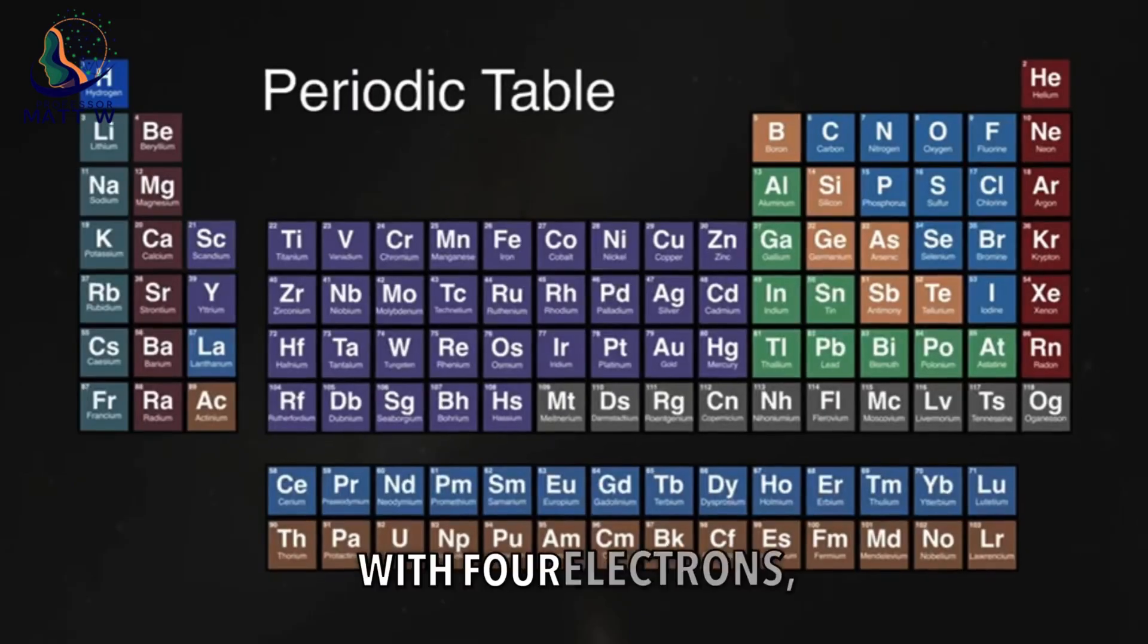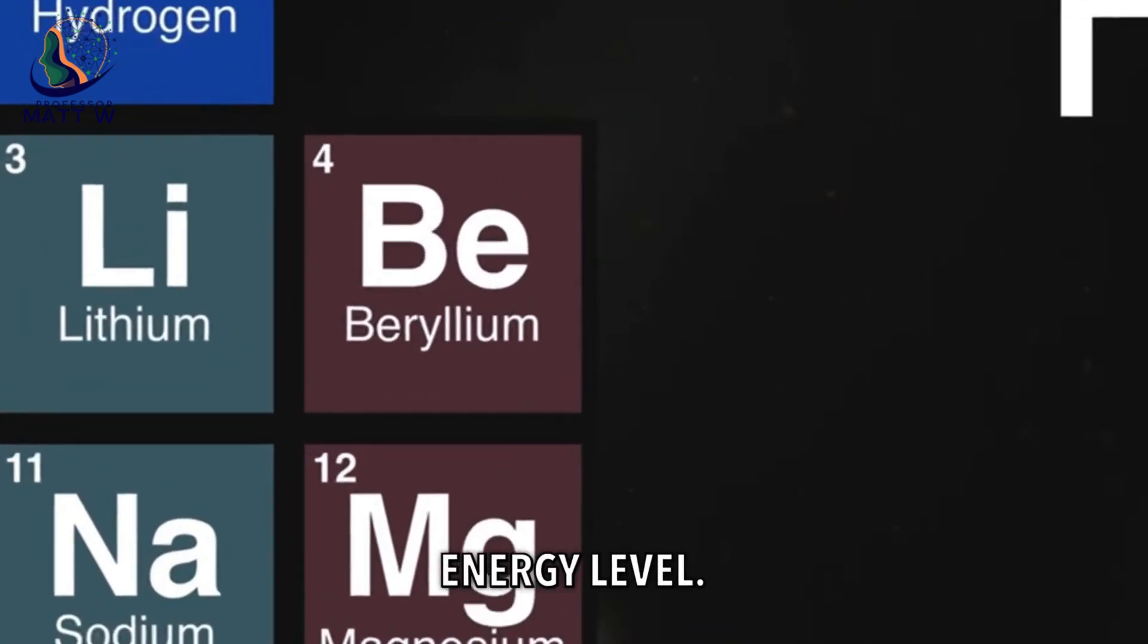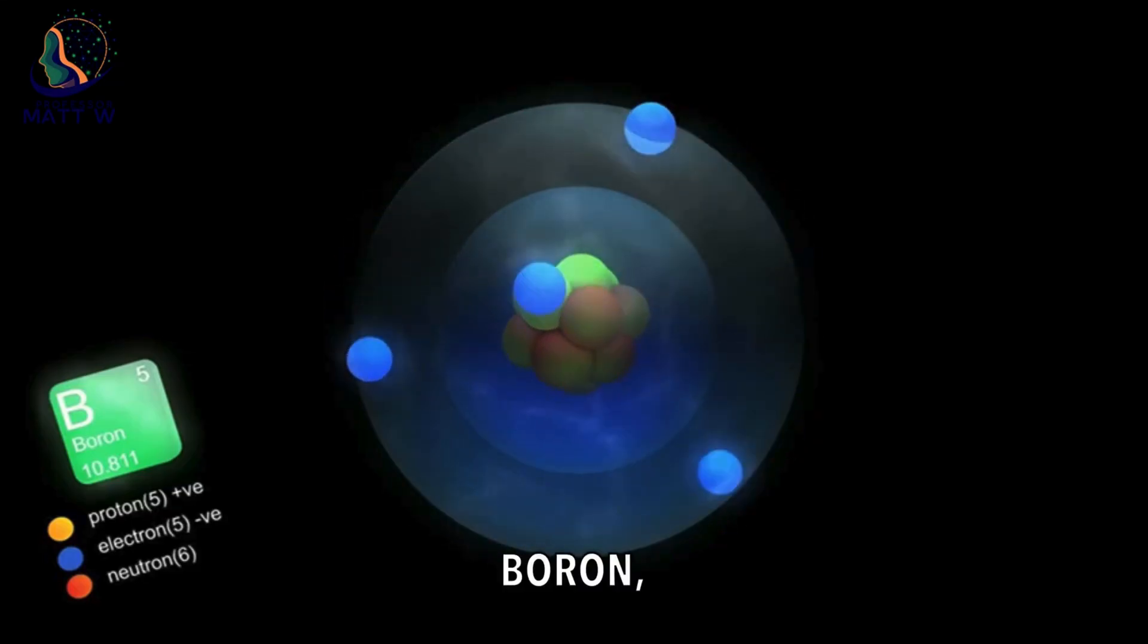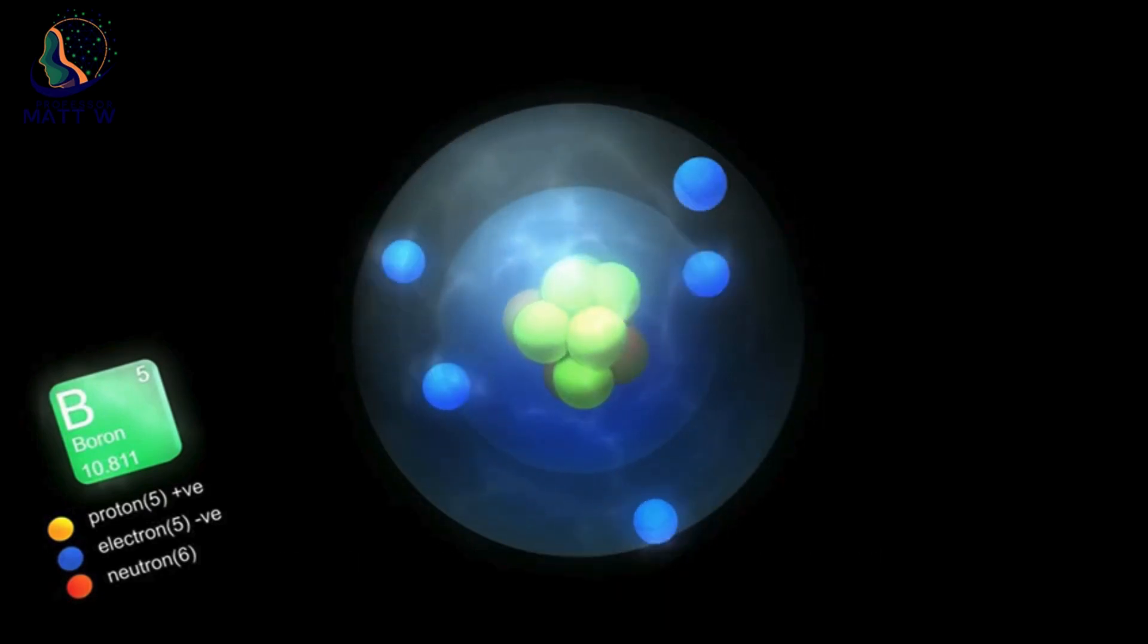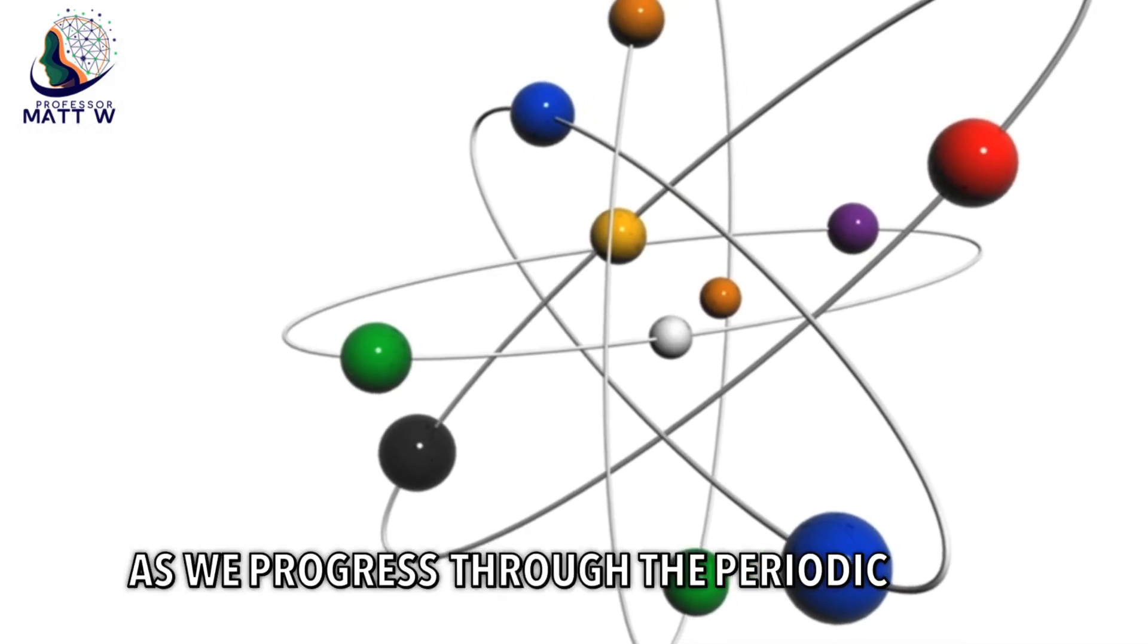Beryllium, with four electrons, fills the s orbital of the second energy level. Boron, with five electrons, places its fifth electron in a p orbital. As we progress through the periodic table, we encounter d and f orbitals.